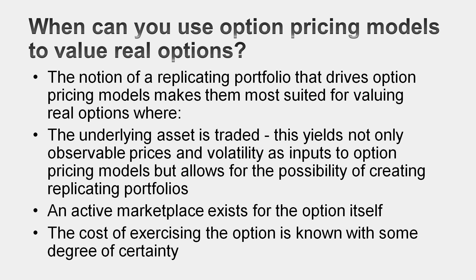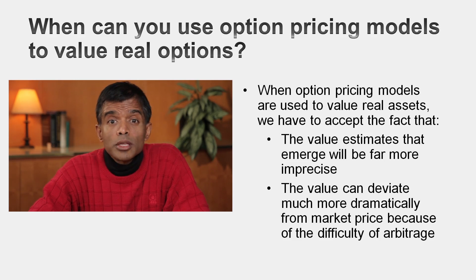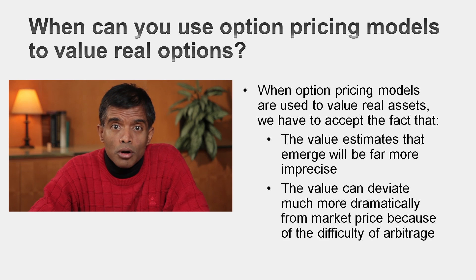To be able to do replication and arbitrage, you have to be able to buy and sell the underlying asset, buy and sell the option, and borrow and lend at the risk-free rate. The further away you get from those three conditions, the less likely it is that option pricing models will deliver a fair estimate of value for your option.